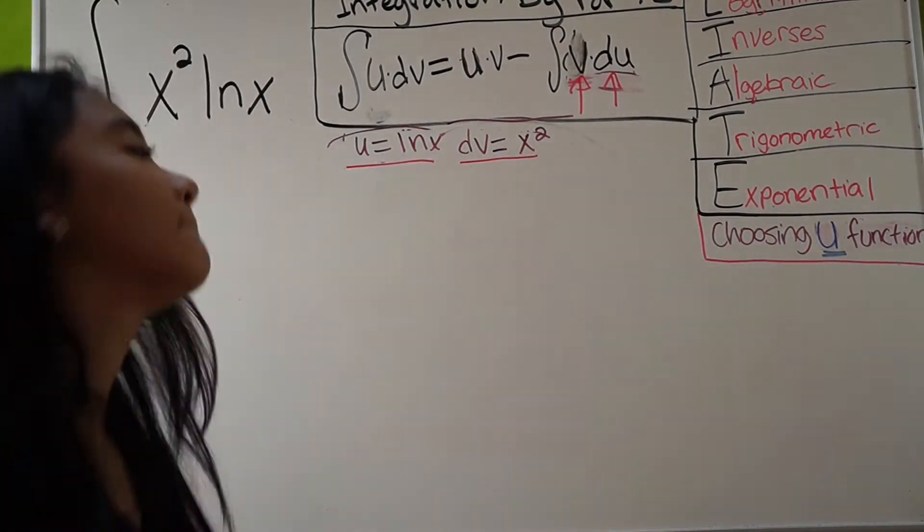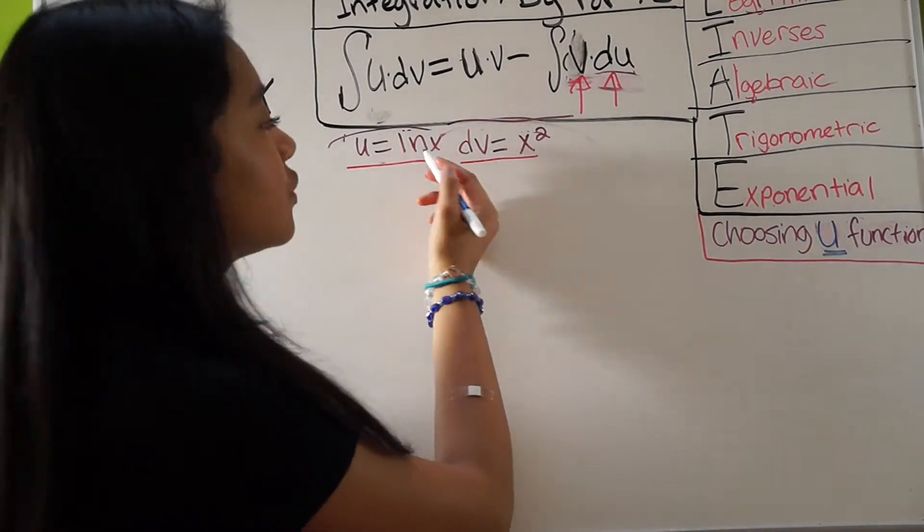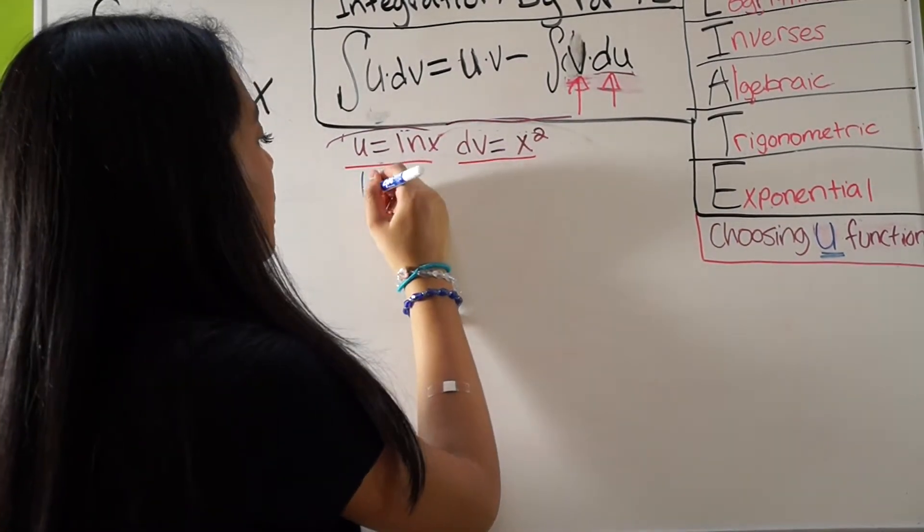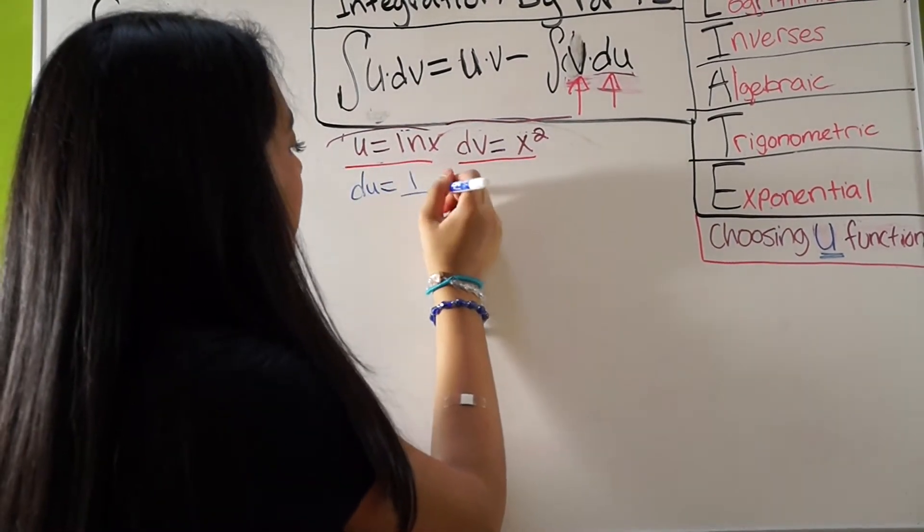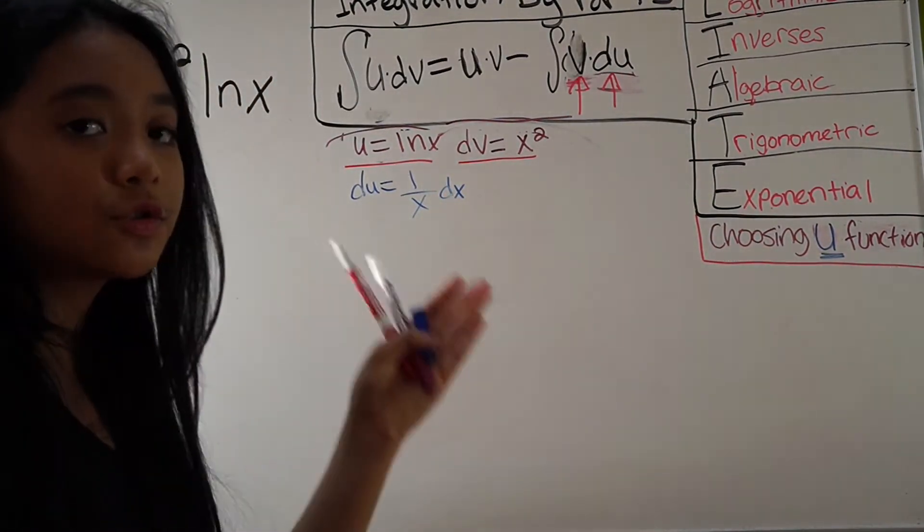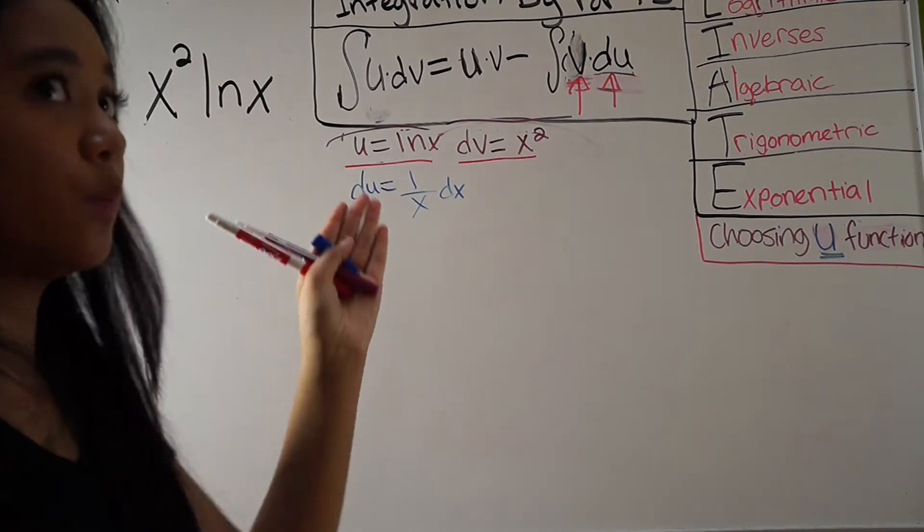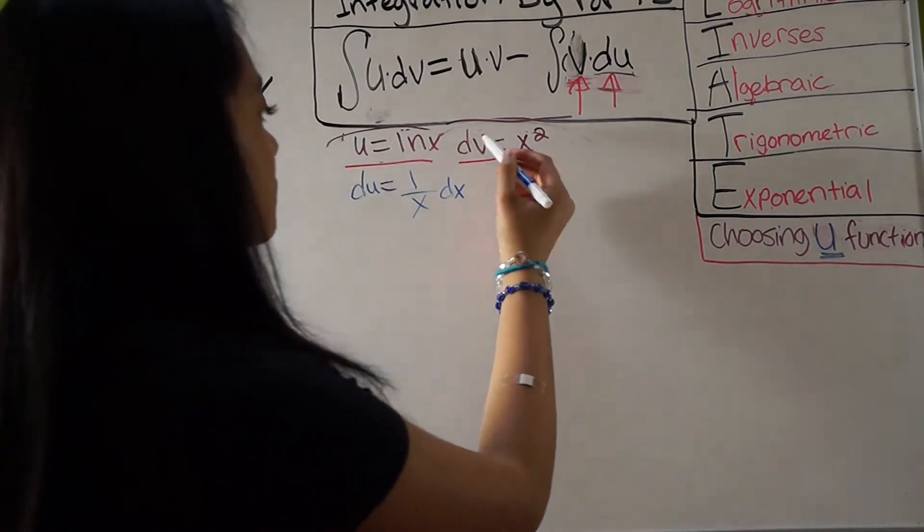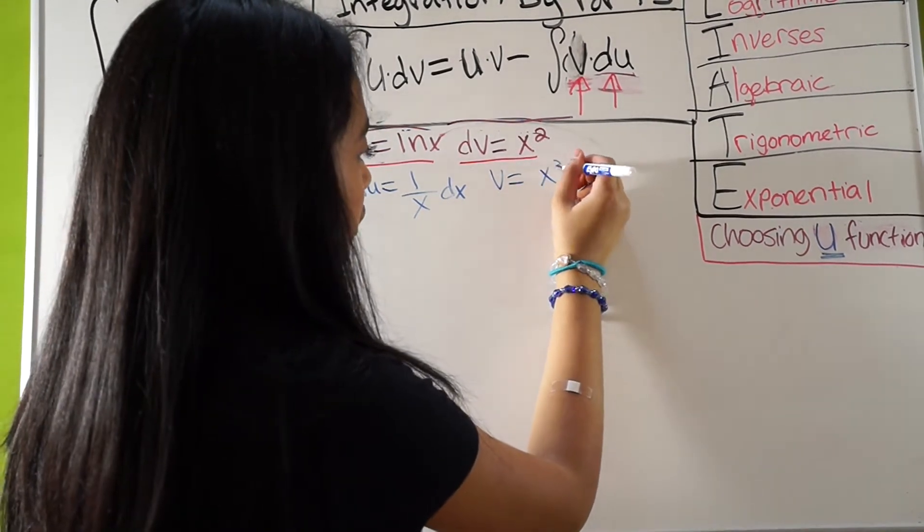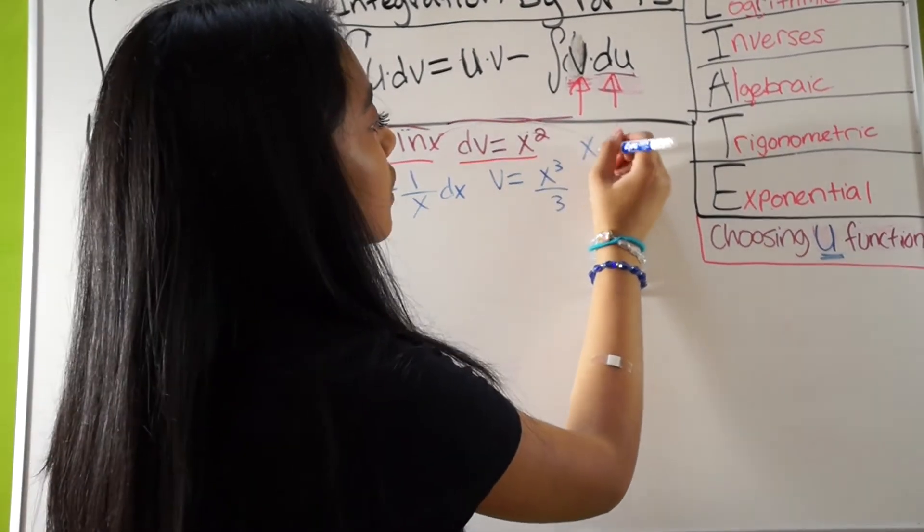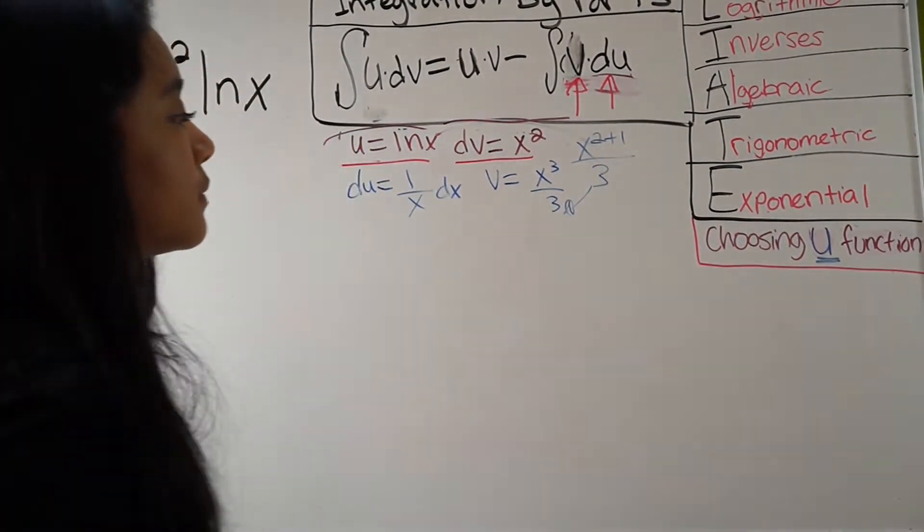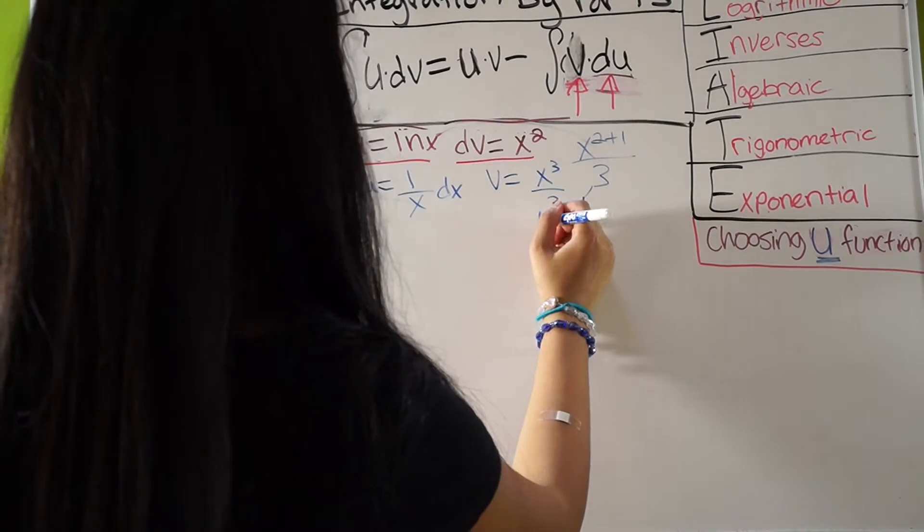We know right away that the derivative of ln x, careful, is 1 over x dx, and we know the integral, that was the derivative of this, and we know we have to integrate. So, the integral of DV is just x cubed all over 3, because if you know how to integrate, 2 plus 1, 3, there we go. Actually, here we go.